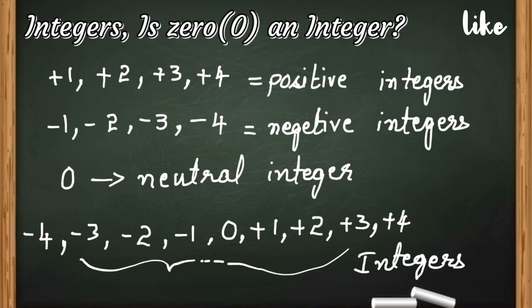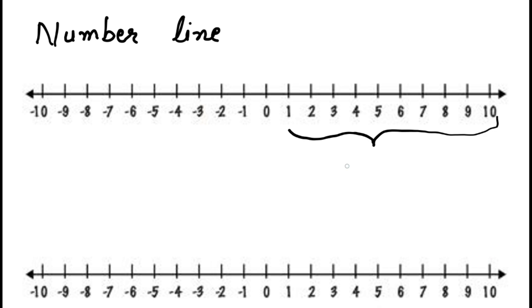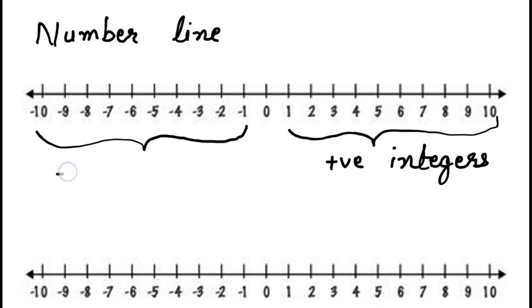So I hope you all have understood what are integers. Integers are numbers with plus and minus signs along with 0. Now here, this is a number line. You can see positive integers and negative integers also. In a number line, 1 to 10 are positive integers, and minus 1 to minus 10 are negative integers. And 0 is a neutral integer.